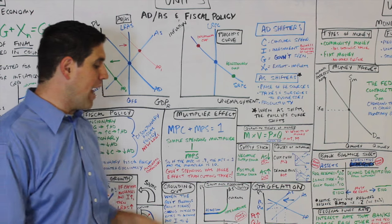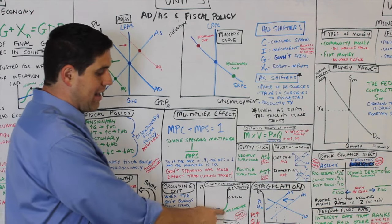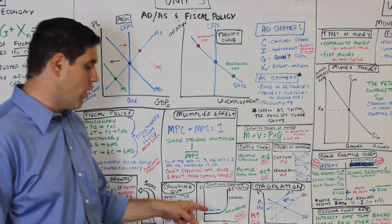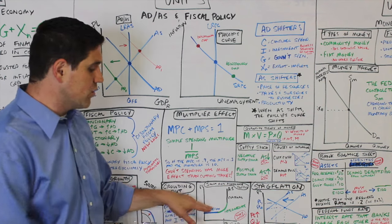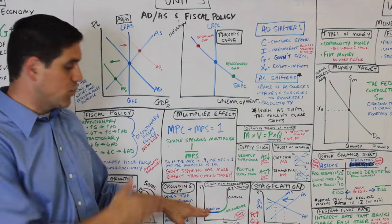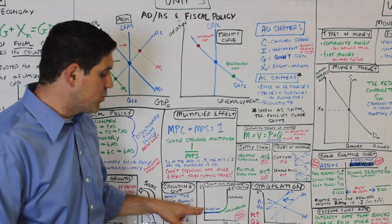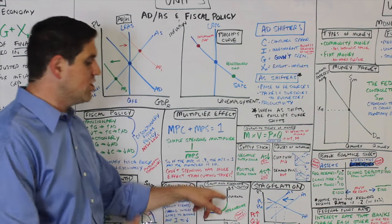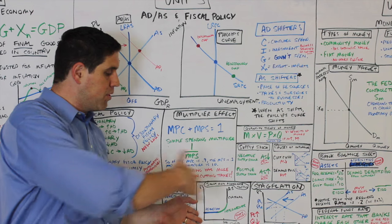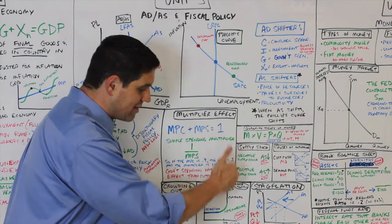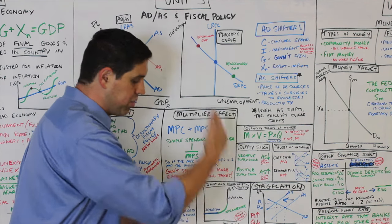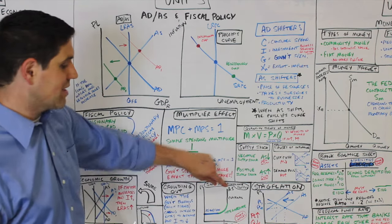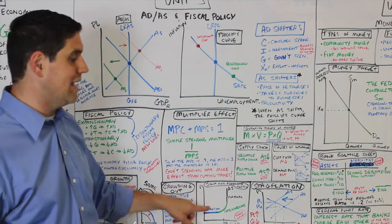The aggregate supply curve has three different shapes: the Keynesian, Intermediate, and Classical range. The Keynesian range is the idea that wages are sticky, so price level doesn't really go down when we're in really bad unemployment. But as we get closer to full employment, wages start going up and we can't produce any more — so the quantity at some point is completely set because we can't produce beyond that point. That's the classical and Keynesian range.